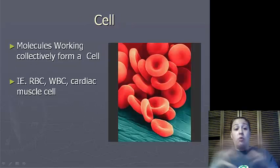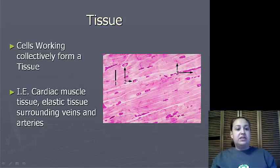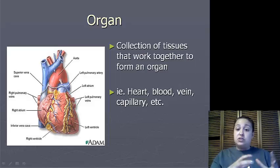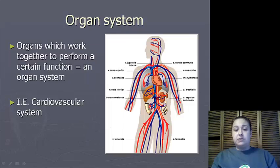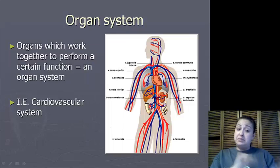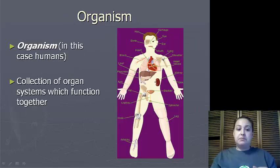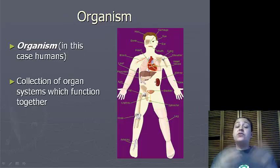These molecules work together collectively to form a cell. Cells collectively work together to form tissues. Tissues work together to form organs. Organs work together to form organ systems. And organ systems function together to form an organism.